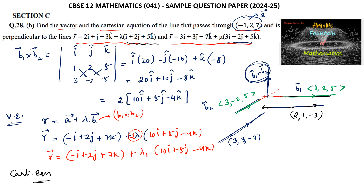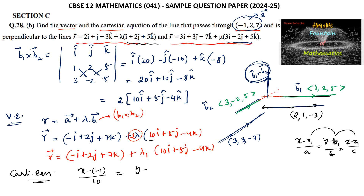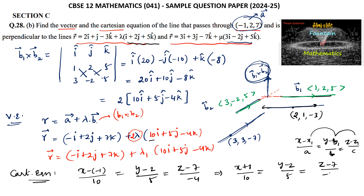The Cartesian equation of the line passing through (x₁, y₁, z₁) is (x - x₁)/a = (y - y₁)/b = (z - z₁)/c. Here x₁, y₁, z₁ is (-1, 2, 7) and the direction ratios are from B1 cross B2, which are 10, 5, -4. So the Cartesian equation is (x + 1)/10 = (y - 2)/5 = (z - 7)/(-4). This is the Cartesian equation, and the vector equation was derived above.